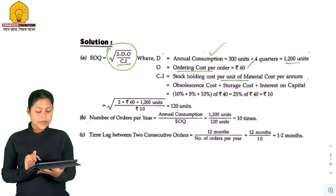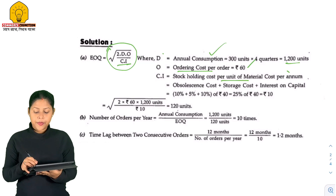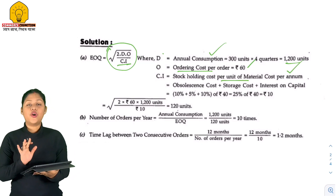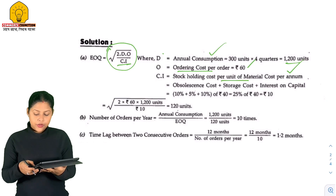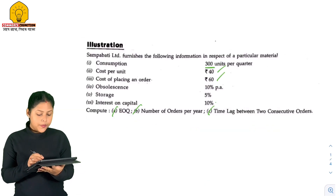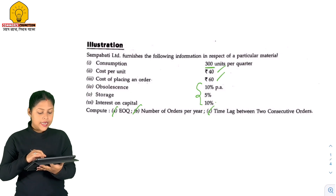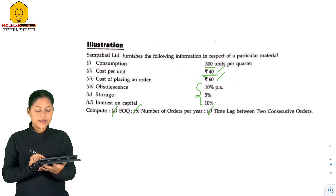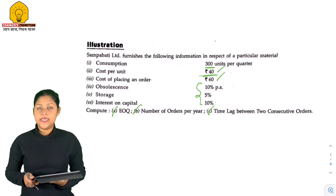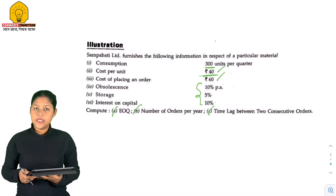Let's take a look at D and O first. Then CI — CI is the stock holding cost per unit of material cost per annum. This is the total stock holding cost per unit cost.